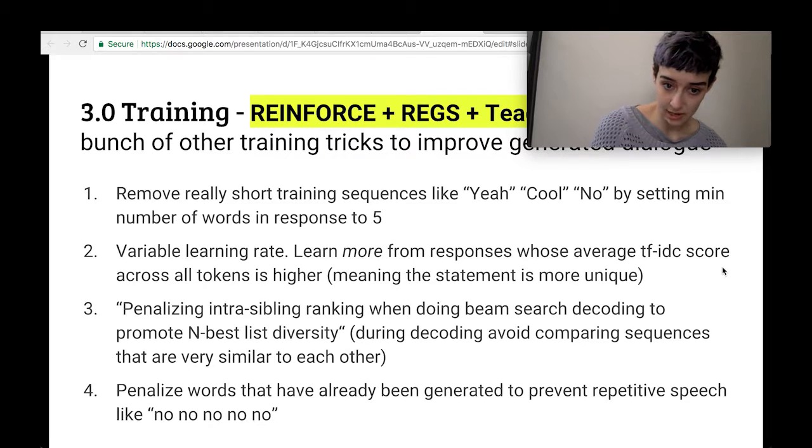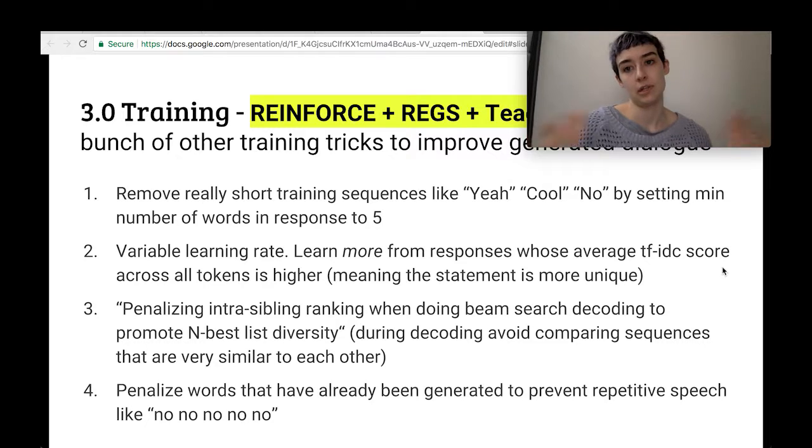Variable learning rate, second one. This means you learn more from responses whose average TF-IDF score is higher. What that means, if you're not familiar, is that inverse document frequency is going to give a higher score for words that are more unique, like platypus or pterodactyl, whereas the, to, and a are very boring, very common words in a document. So learn more from more unique stuff.